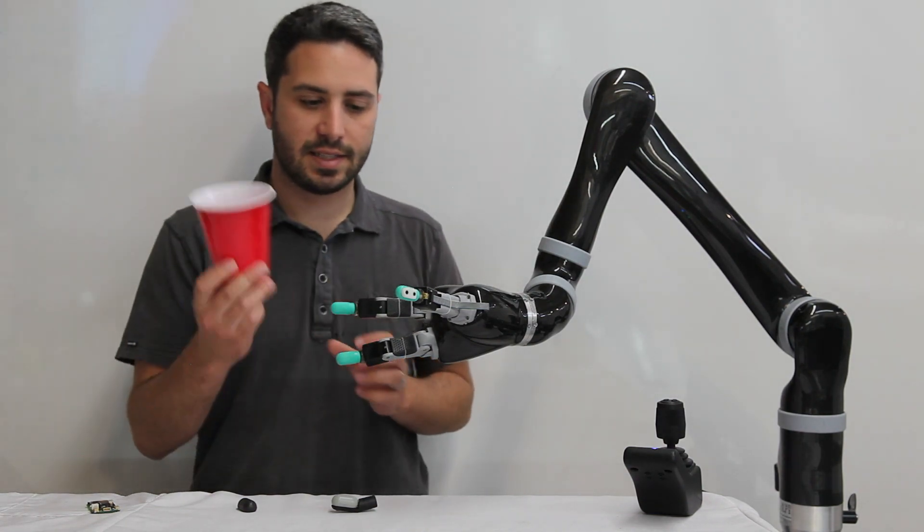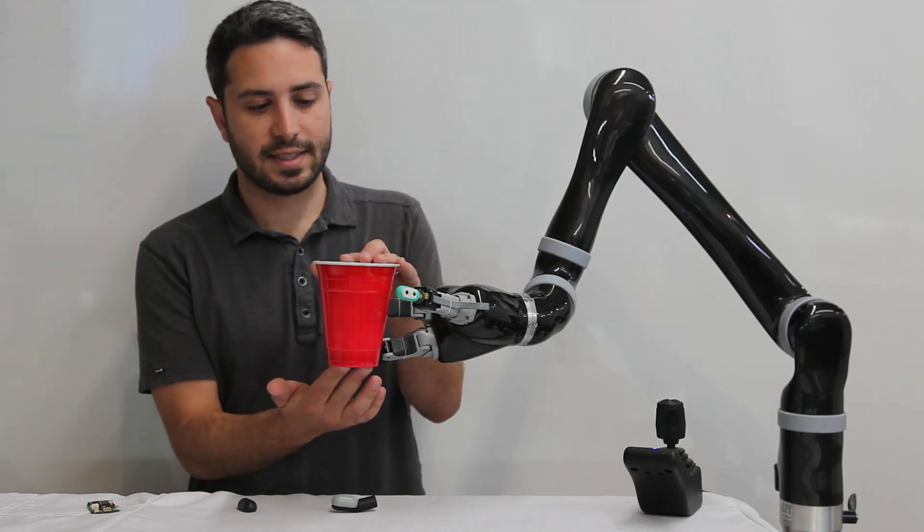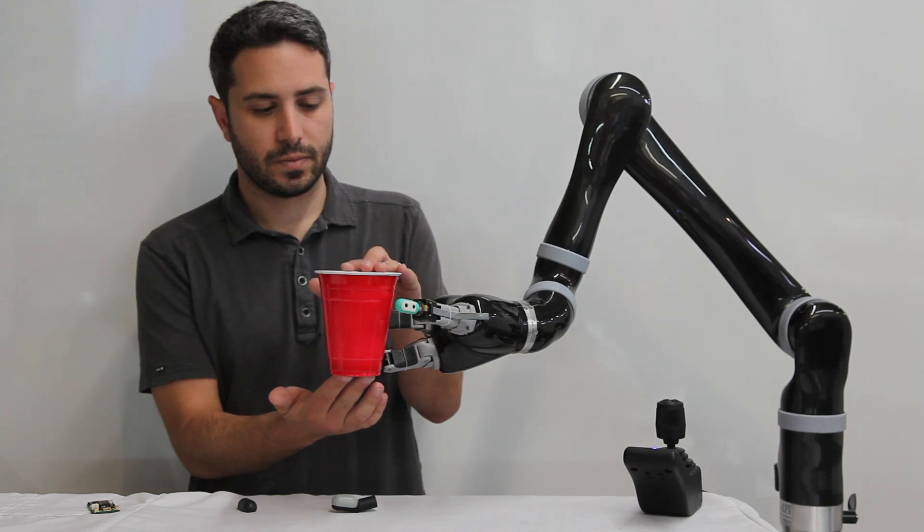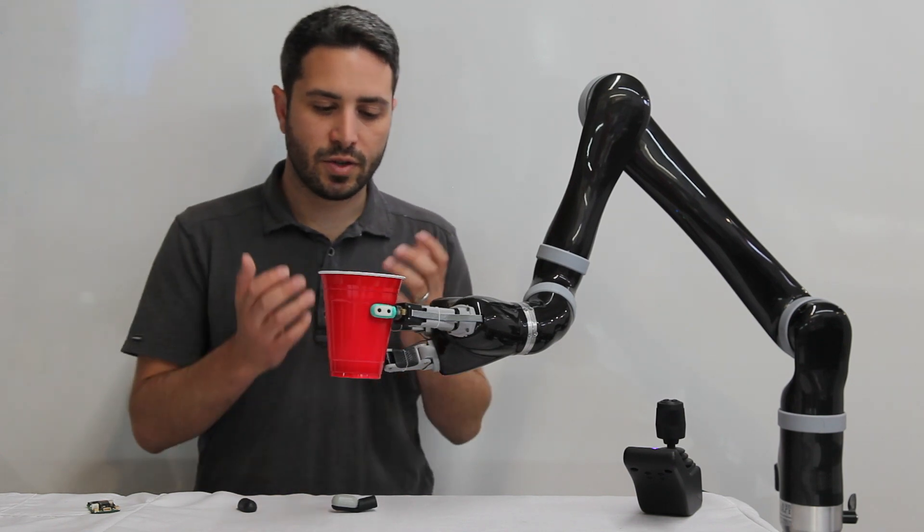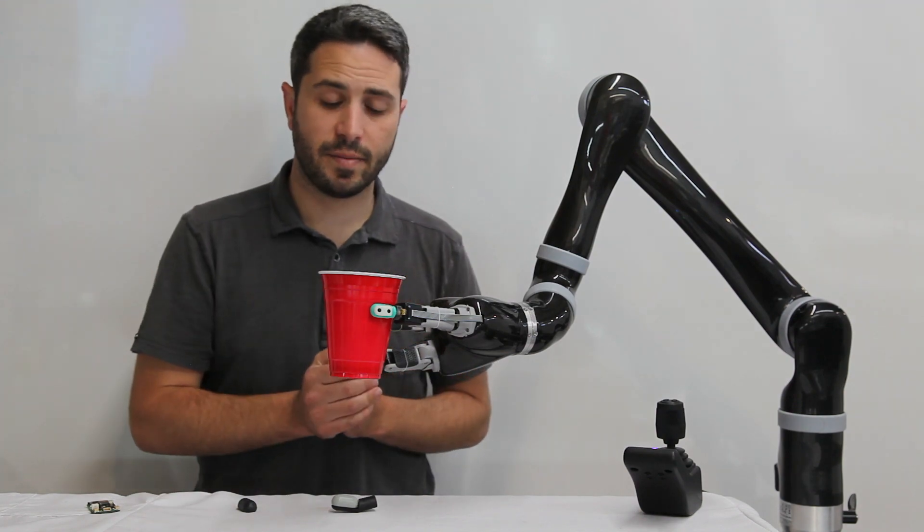For instance, if I were to take this cup, we could do a fragile grasp with contact detection. So when the BioTac detect contact with the cup, they stop the fingers from advancing.